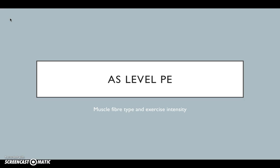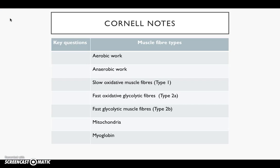We need to know the academic terms for these fibres and link them to sporting events. For your Cornell notes, write down: aerobic work, anaerobic work, slow oxidative muscle fibres which is type 1, fast oxidative glycolytic fibres or type 2a, and finally fast glycolytic muscle fibres type 2b, and then mitochondria. Pause this and get those down.